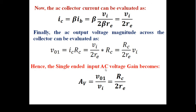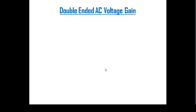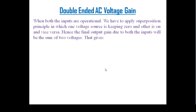So the AC voltage gain for a single-ended differential amplifier is RC divided by 2*re. For the double-ended AC voltage gain, we now give input at both bases — at Q1 and Q2 — and we need to find the voltage gain for each individually.